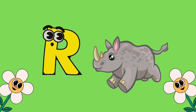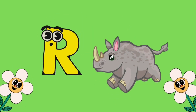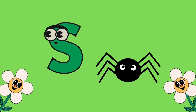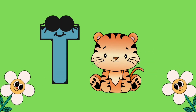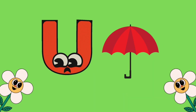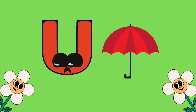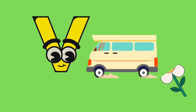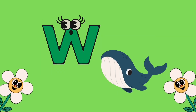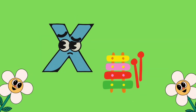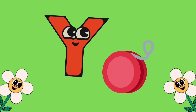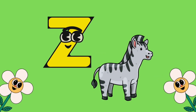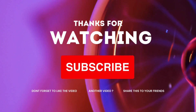Q is for queen, R is for rhino, S is for spider, T is for tiger, U is for umbrella, V is for van, W is for whale, X is for xylophone, Y is for yo-yo, Z is for zebra.